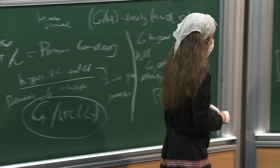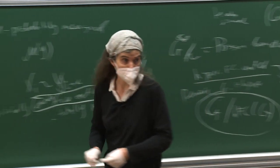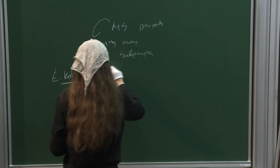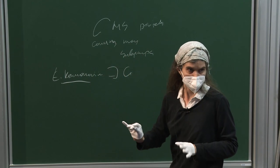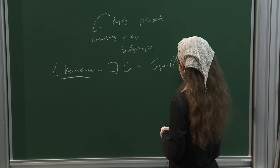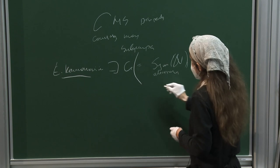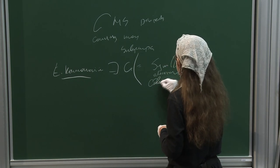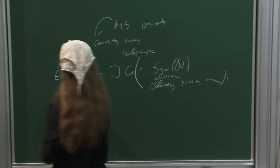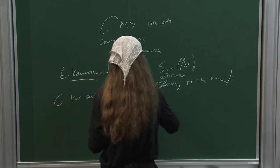Until recently, one didn't know any non-free actions. Our result with Vadim shows there exist groups G — for example the infinite symmetric group of a countable set, or a locally finite amenable group — such that the action on the boundary is not free.